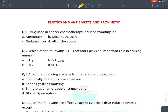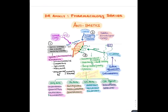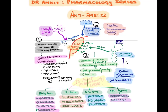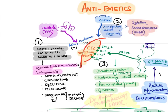Now let's discuss emetics and anti-emetic drugs. There is an area called CTZ — chemoreceptor trigger zone, also known as area postrema — the vomiting center of our brain. It lies outside the blood-brain barrier. For motion sickness, sea sickness, and morning sickness: sickness arises from the vestibule of the ear. When endolymph rotates, vestibular nerves go to the cerebellum and stimulate the CTZ via muscarinic and histaminic receptors, causing nausea and vomiting.